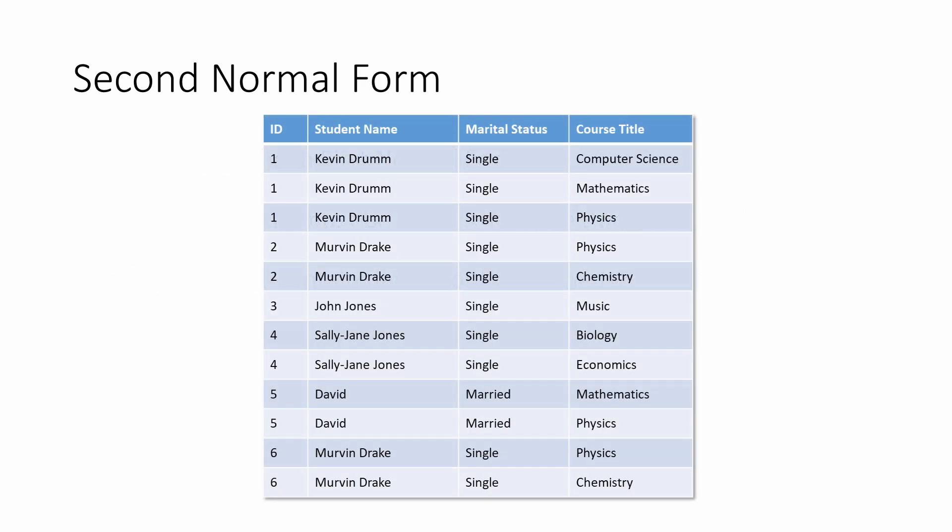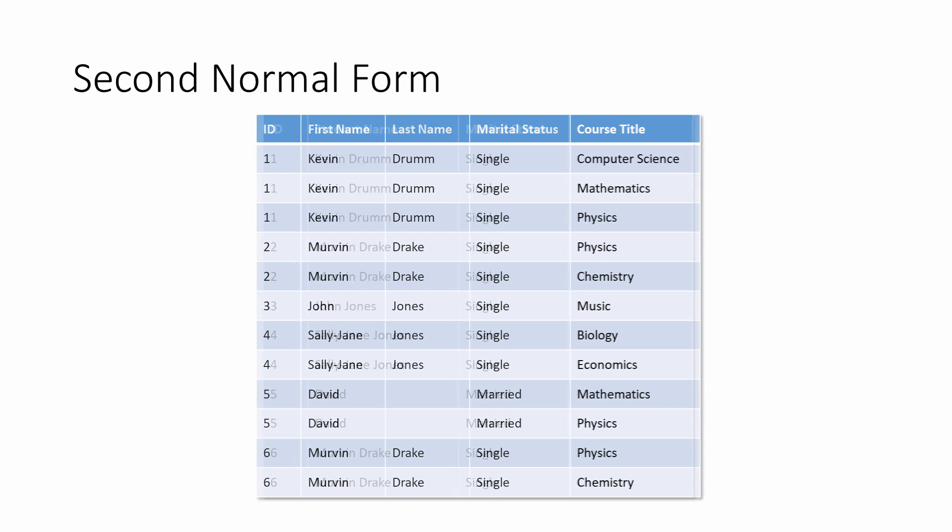This table is in first normal form — debatably. Let's remove any argument by separating the first name and last name into separate columns. So now the first condition for second normal form is satisfied: the table is already in first normal form.